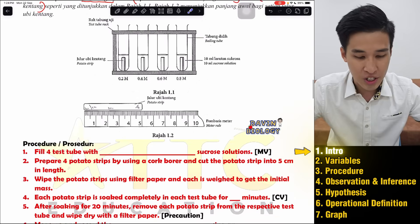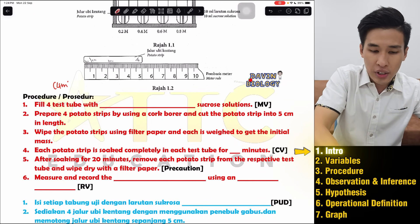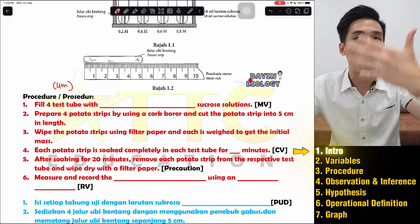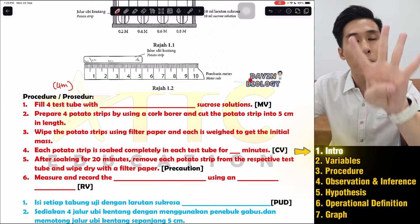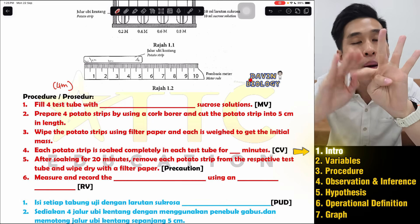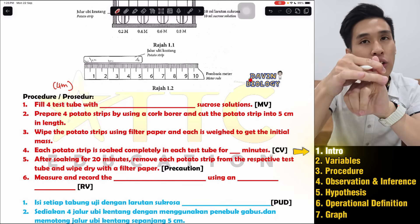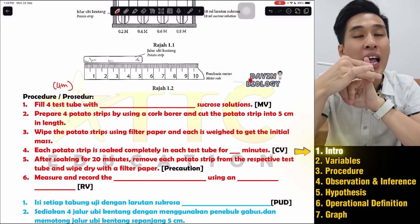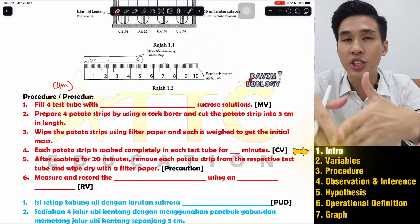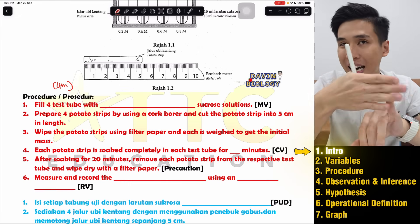First thing we're going to talk about is procedure format. A lot of you will think: how do I get these marks? How come every time I write the whole procedure, I get one mark only? So for these four marks, you must include the three variables — how you handle your MV, RV, and CV — and the fourth one is the precautionary step, the langkah berjaga-jaga, which means how to make your experiment more accurate.